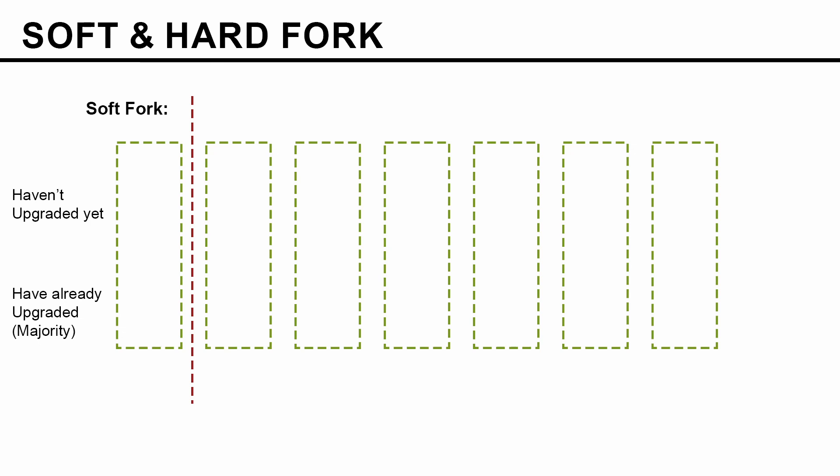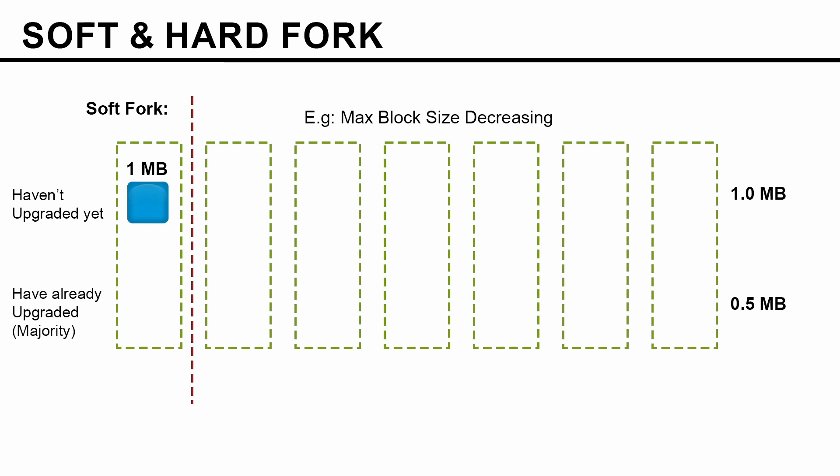Let's see an example where the maximum block size is decreasing. For the old network, let's say the maximum block size is 1 megabyte, and for the new network the maximum block size is 0.5 megabyte. This is an example of soft fork because the rules are tightened up. Before the fork there was only one chain. Now after the red dotted line the rules have changed. The first block found after the new rule is 0.4 megabyte, which follows both rules and is accepted by both networks.